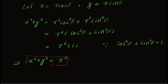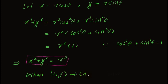Also, the limit changes: when (x, y) approaches (0, 0), then r approaches 0, since r squared equals x squared plus y squared. When x and y both approach 0, then r approaches 0.